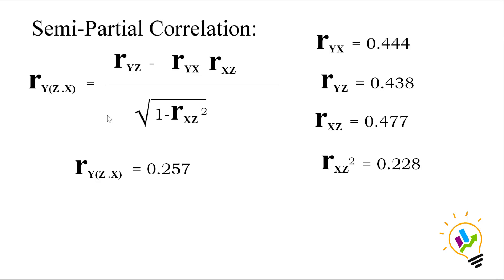In the next video, I am going to discuss semi-partial correlation using regression analysis. In regression analysis we talk about the r-square value, which is the total variance explained by two independent variables on the dependent variable. If we want to know the variance explained by one independent variable on the dependent variable, we can use semi-partial correlation. Please watch that video as well. Thank you.